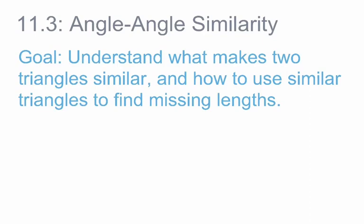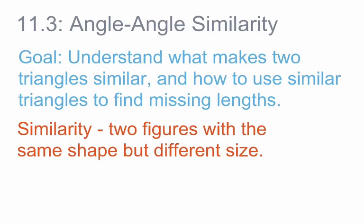Back in Module 12, when we were looking at dilations, we talked about similar figures. It was at that time that we first came up with a rough definition for similarity, which we said was two figures that have the same shape but different size. The angles will all be congruent, but the lengths of the sides will be different.